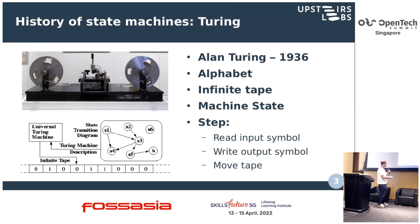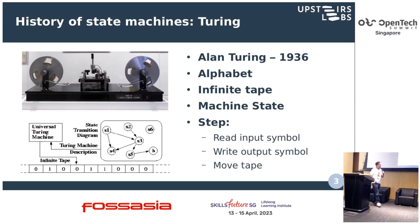An interesting property of the Turing machine is that depending on the current state the machine is in, it can also move the tape back and forward a certain number of slots. That is essentially what happens with the Turing machine.